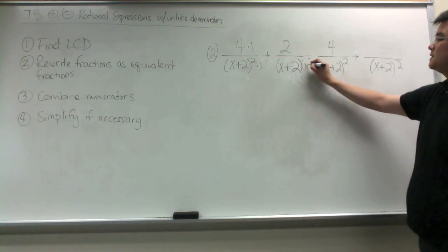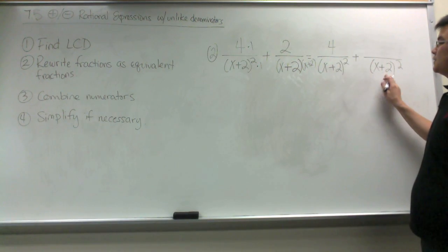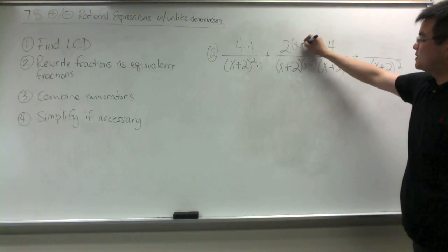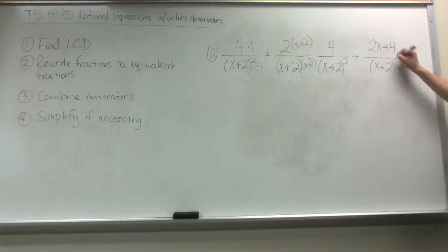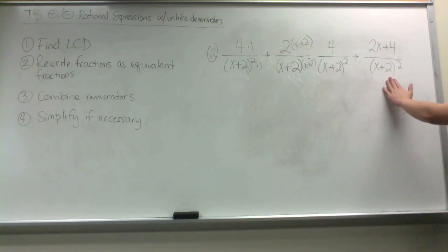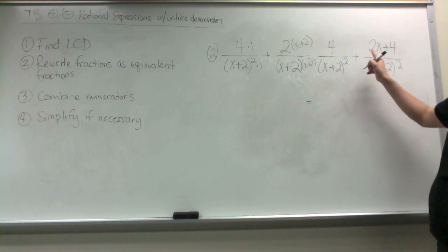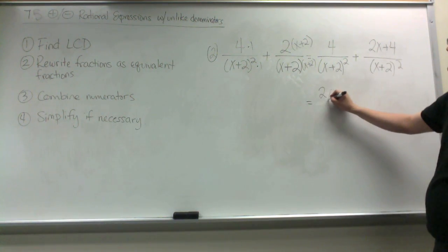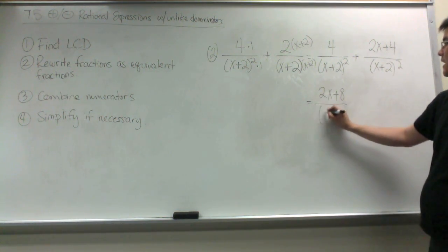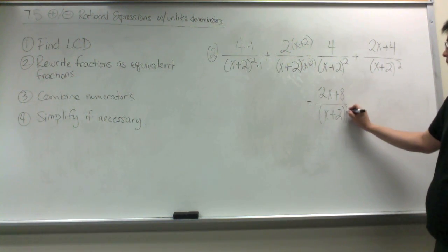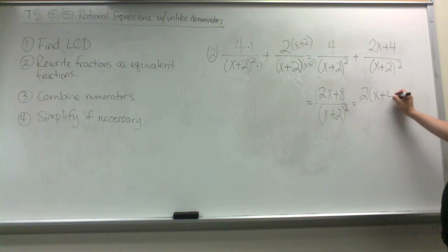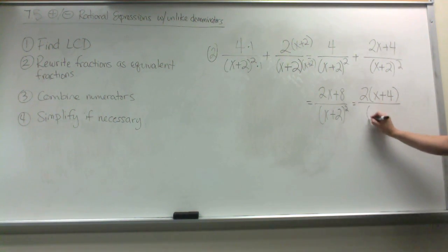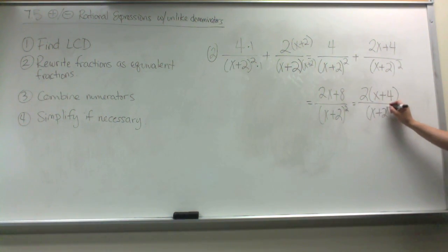Then we're going to multiply (x plus 2) by (x plus 2) to get (x plus 2) squared, so 2 gets multiplied by (x plus 2). When I distribute, I get 2x plus 4. Now I can add the two fractions together because they have the same denominator, combining the numerator to get 2x plus 8 over (x plus 2) squared. Then I factor the numerator by the GCF, which is 2, and nothing can simplify, so this is my final answer.